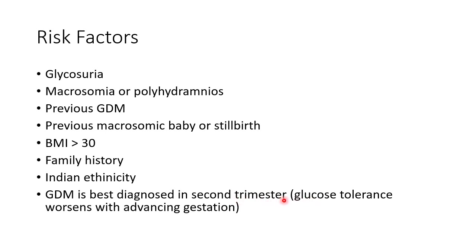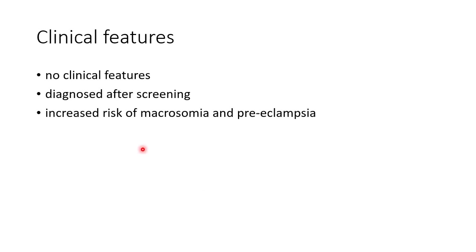GDM is best diagnosed in the 2nd trimester because glucose tolerance worsens with advancing gestation. So we do a 75 gram oral glucose tolerance test in the 2nd trimester to diagnose GDM. GDM has no specific clinical features and is diagnosed after screening. Patients with GDM have an increased risk of macrosomia and preeclampsia.